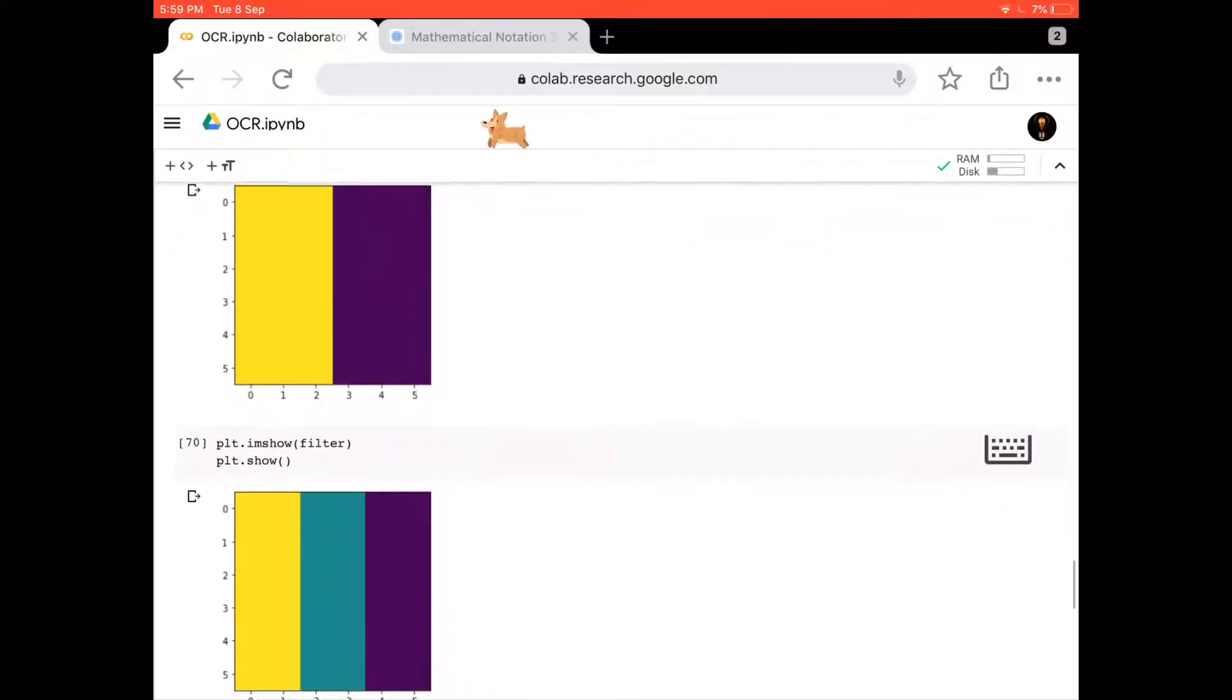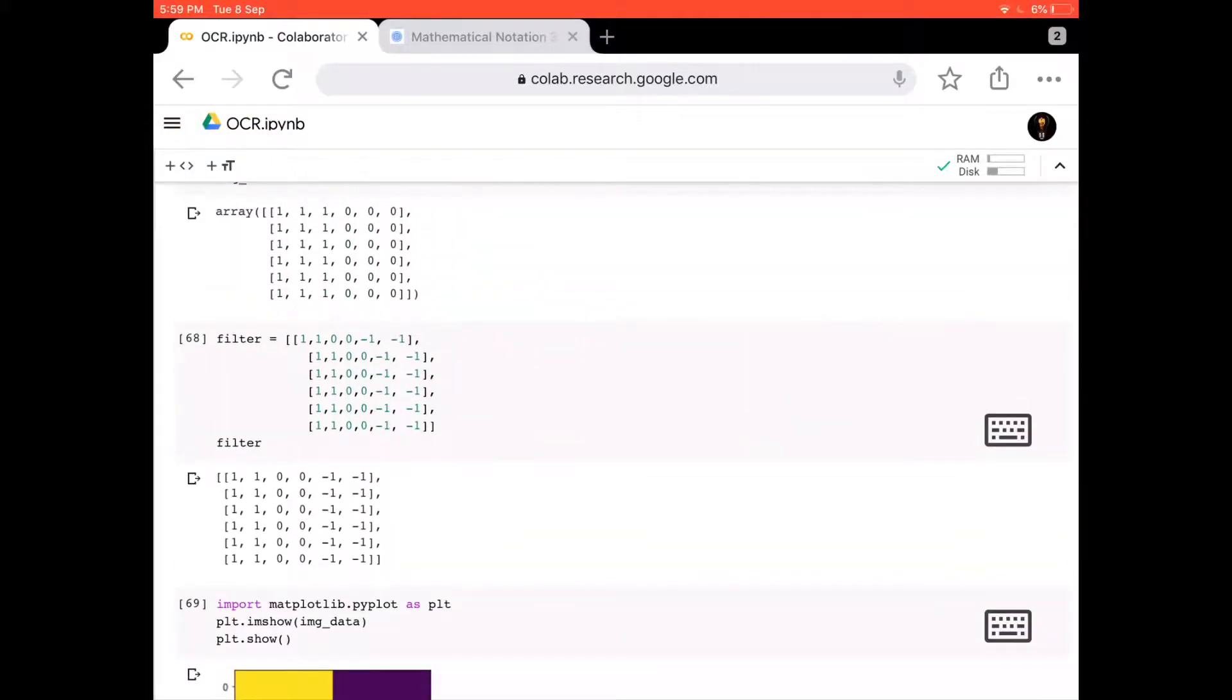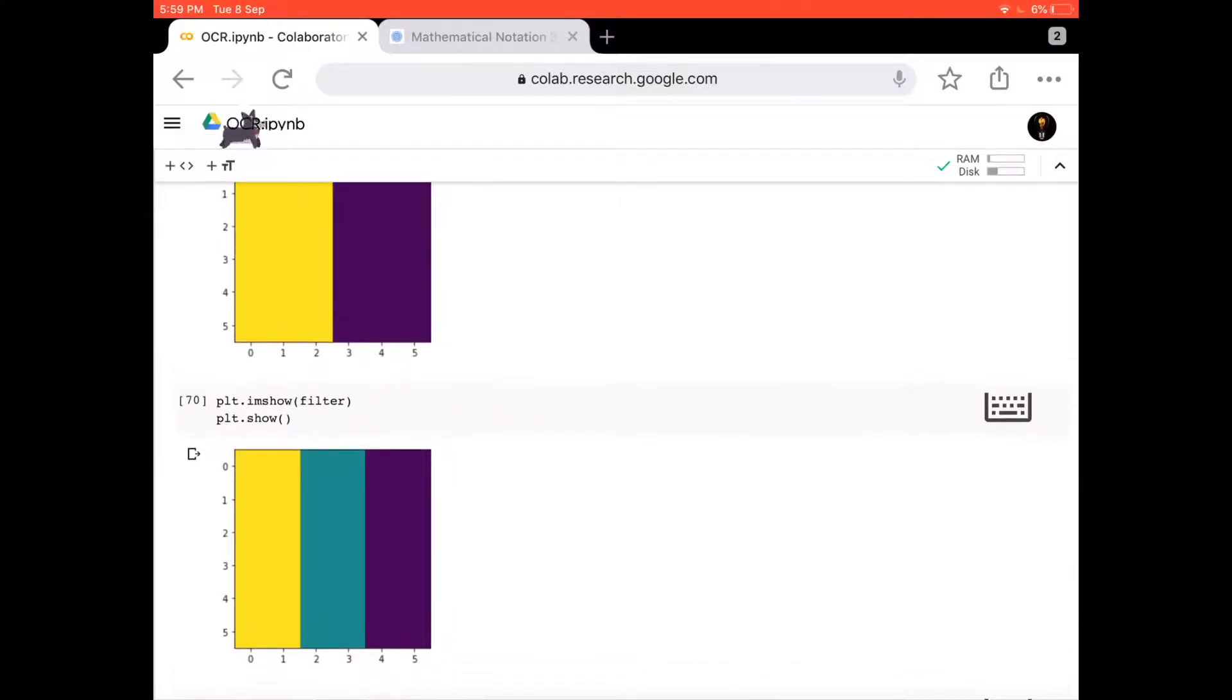If I plot my filter, you see three colors because I have 1, 0, and minus 1. The first two columns are 1, 1, the second two were 0 and 0, and the fifth and sixth elements were negative 1. So it appeared something like this.